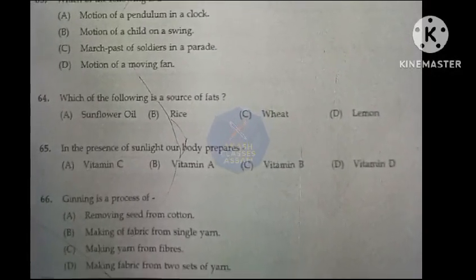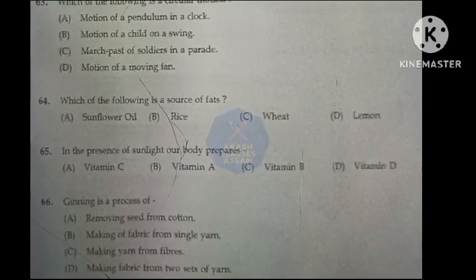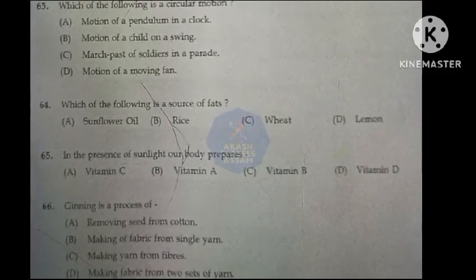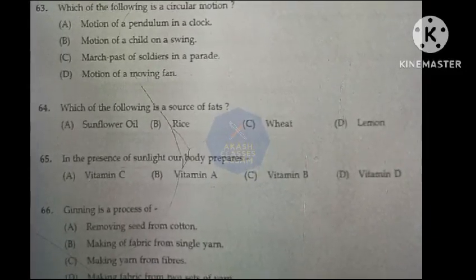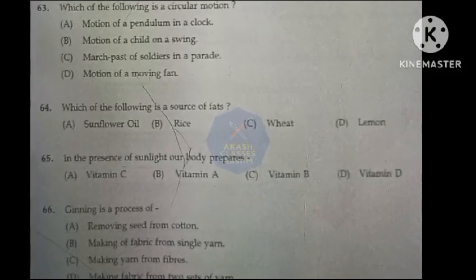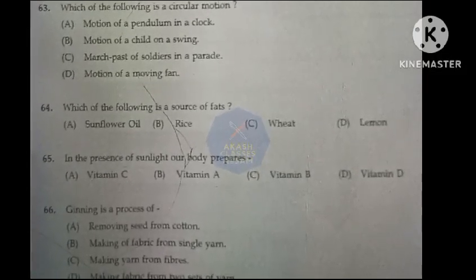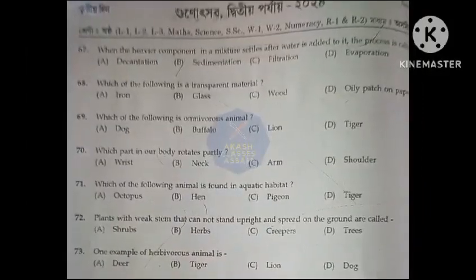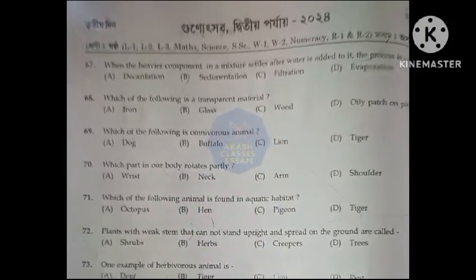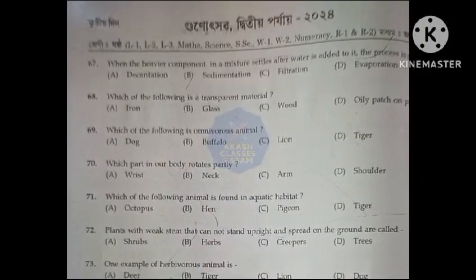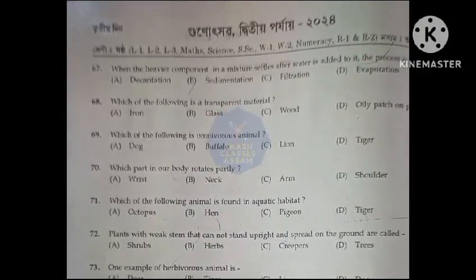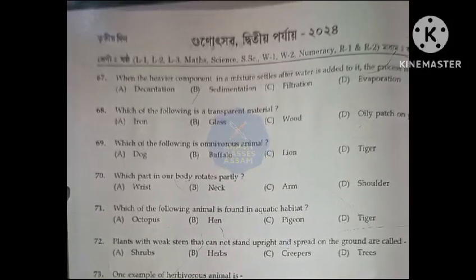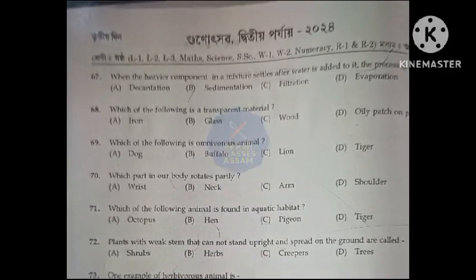Which of the following is a circular motion? Option D, motion of a moving fan. Which of the following is a source of fats? Option A, sunflower oil. In the presence of sunlight our body prepares: Option D, vitamin D. Ginning is a process of: Option A, removing seed from cotton. When the heavier component in a mixture settles after water is added to it, the process is called: Option B, sedimentation. Which of the following is a transparent material? Option D, oily patch on paper.